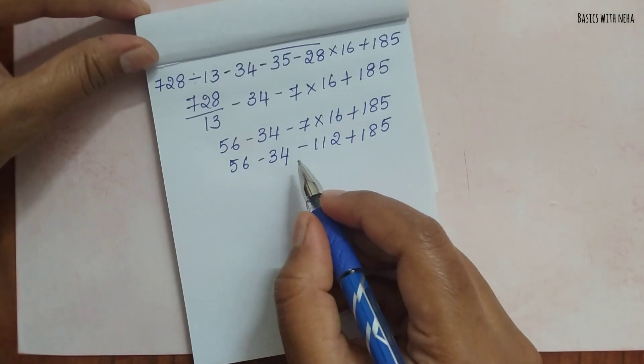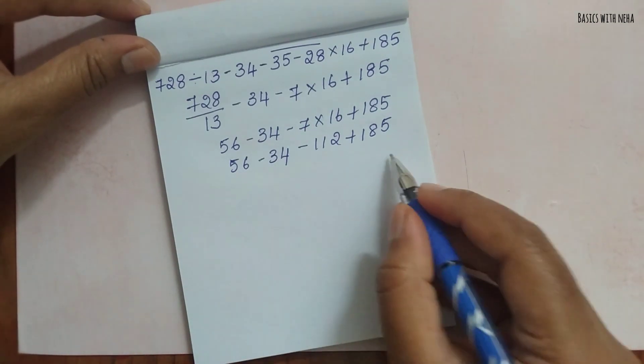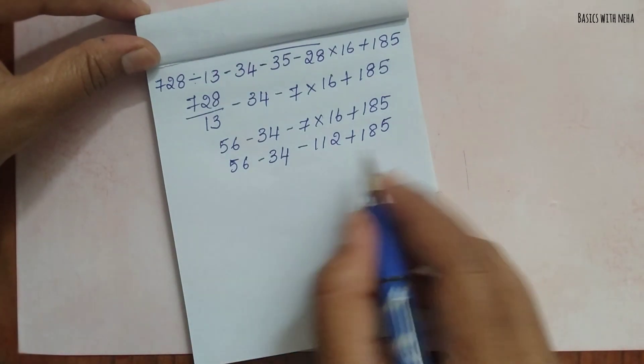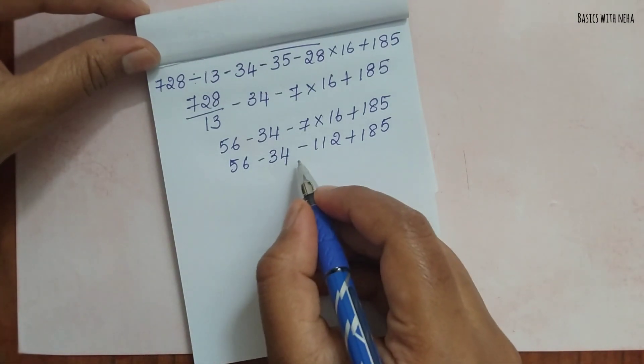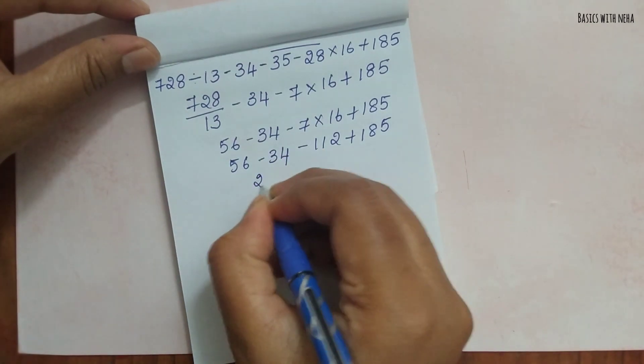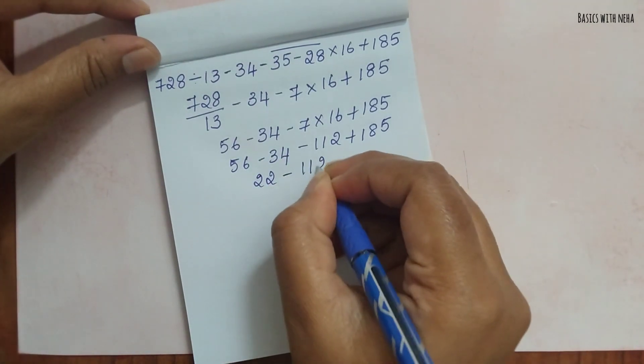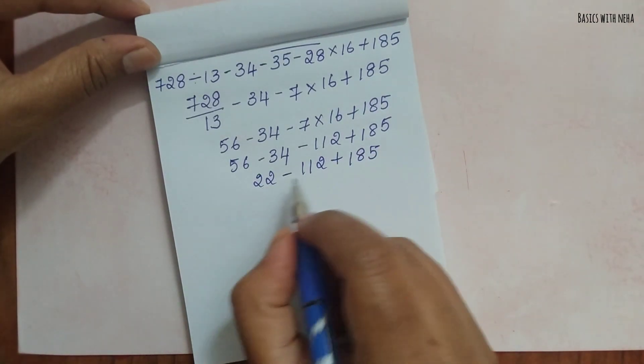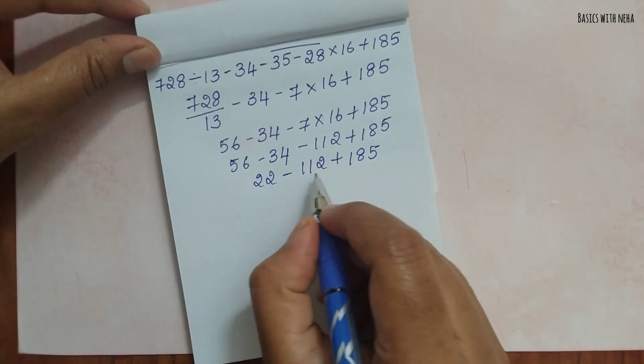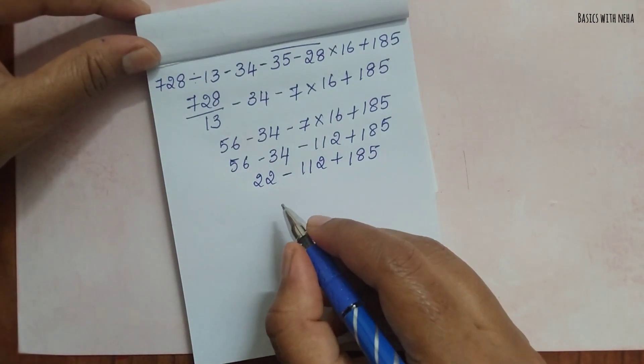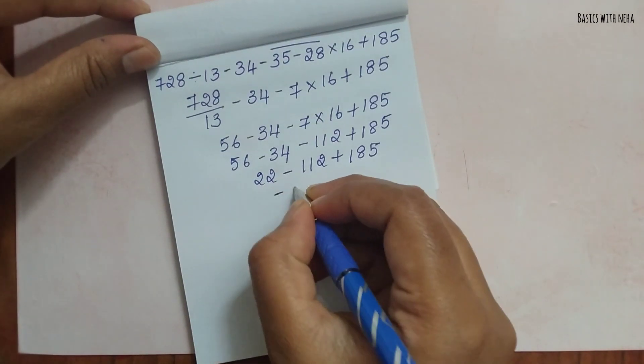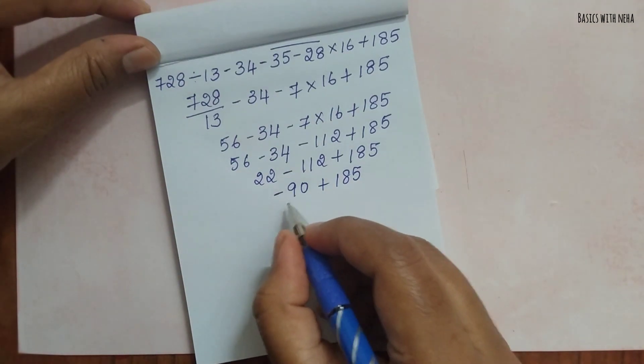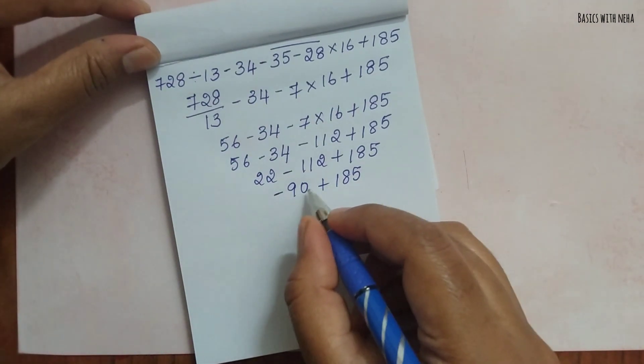But there's also a condition: whatever comes from left we should do. If plus and minus are both there in one calculation, we should start from left. So we'll start from here: 56 minus 34 which is 22 minus 112 plus 185. Now we should minus this: 22 minus 112 will be a negative answer which is minus 90 plus 185.